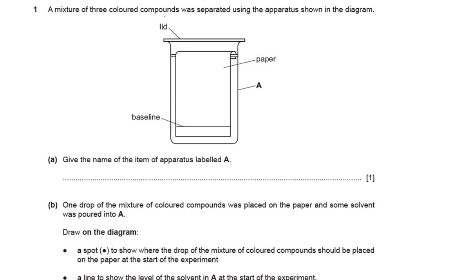Question 1 says a mixture of three colored compounds are separated using the apparatus shown in the diagram. Give the name of the item of apparatus labeled A. A is the label for the outer apparatus — the outer apparatus is a beaker, a big beaker in which the chromatography process is going on. So the apparatus labeled A is a beaker.